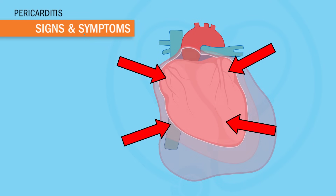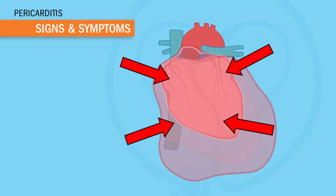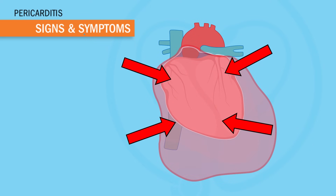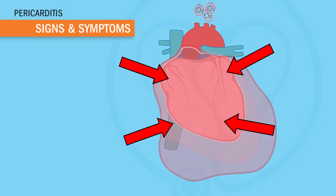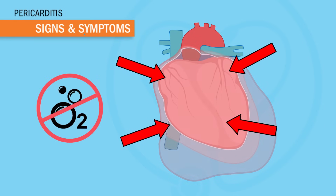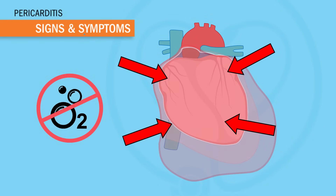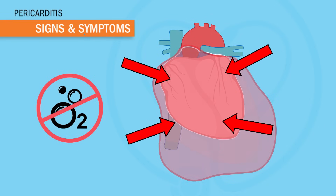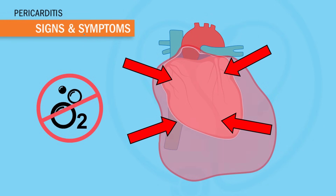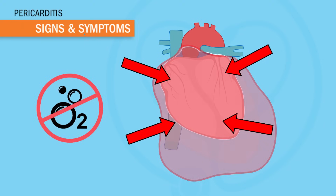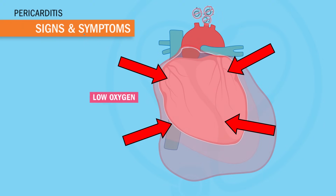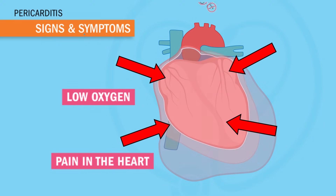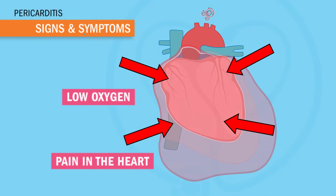Before you start memorizing all the signs and symptoms, let's always recall the patho. With pericarditis of the heart, it can't fully expand because of all that pressure around it, which means the heart can't pump out oxygen-rich blood to the body. And since oxygen is the money of the body, without oxygen your body goes broke and dies. So we'll see complaints that all stem from low oxygen and pain in the heart, aka decreased cardiac output.